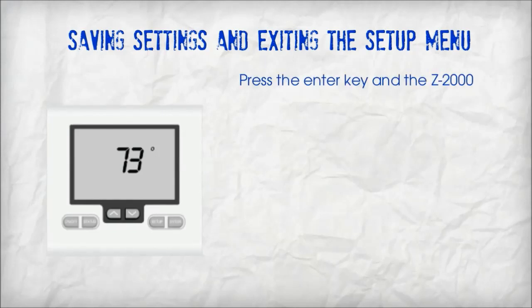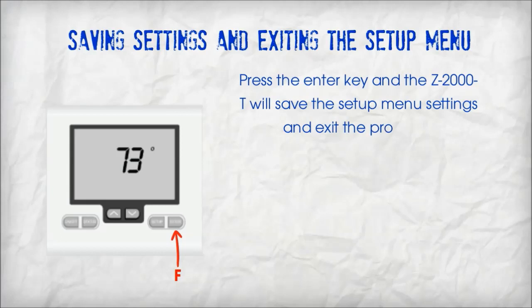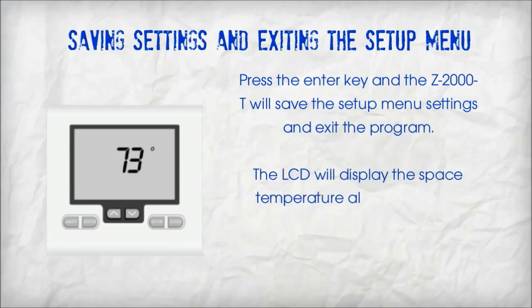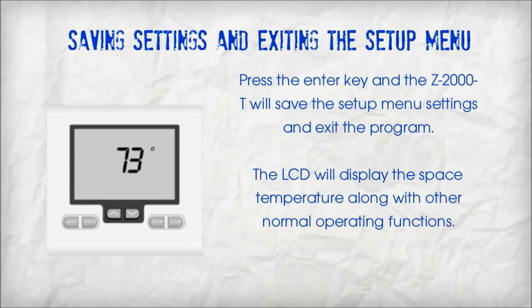Press the enter key and the Z2000T will save the setup menu settings and exit the program. The LCD will display the space temperature along with other normal operating functions.